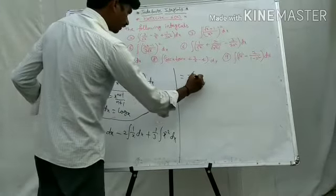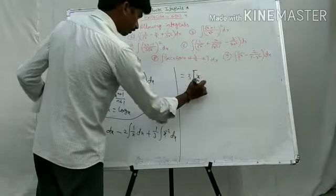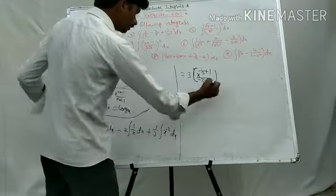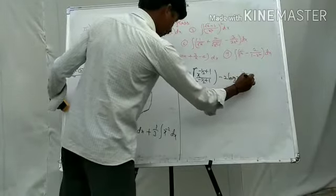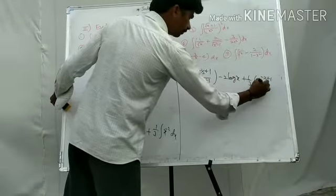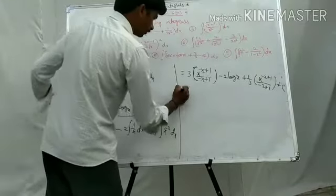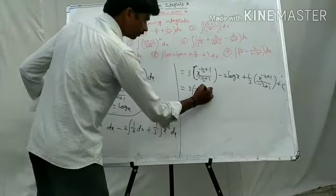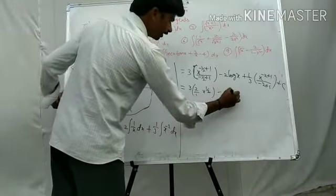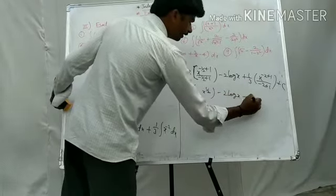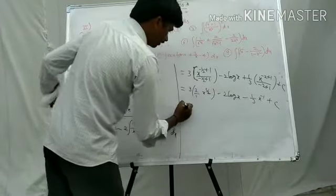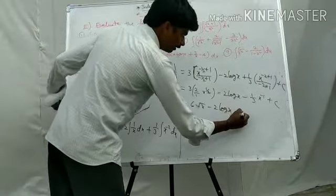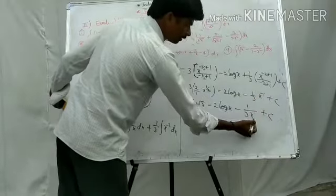That equals 3 times x to the power (minus 1 by 2 plus 1) by (minus 1 by 2 plus 1) minus 2 log x plus 1 by 3 times x to the power (minus 2 plus 1) by (minus 2 plus 1) plus c. Simplifying: 6 root x minus 2 log x minus 1 by 3x plus c. This is the second solution.